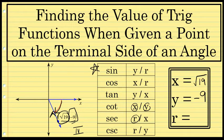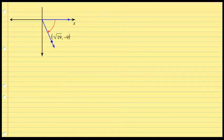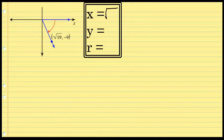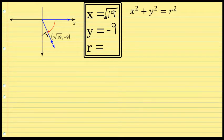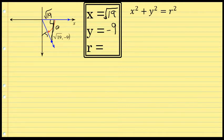All that's missing is the value of r, which is the distance from the origin to the point. Once you determine r, you can write the values of all six trig functions. We know x = √19 and y = -9. To find r, the easiest way is to use the Pythagorean theorem — create a right triangle where one leg is √19 and the other leg has length 9.